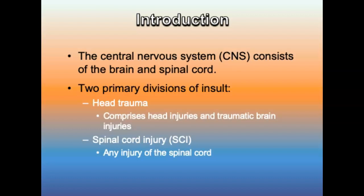The central nervous system consists of the brain and spinal cord. There are two primary divisions of insult that could occur: head trauma and spinal cord injuries.